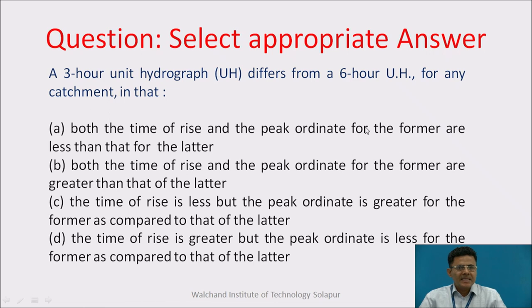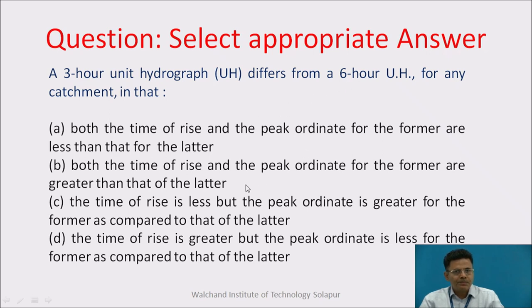Now we will take a question — select the appropriate answer. A 3-hour unit hydrograph differs from a 6-hour unit hydrograph for any catchment. Option A: both the time of rise and the peak ordinate for the former (3-hour UH) are less than that for the latter (6-hour UH). Option B: both the time of rise and peak ordinate of the former are greater than that of the latter. Option C: the time of rise for the 3-hour unit hydrograph is less, but the peak ordinate is greater for the former as compared to the latter (6-hour UH).